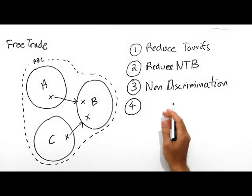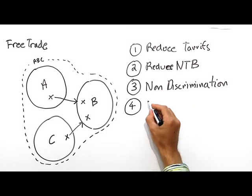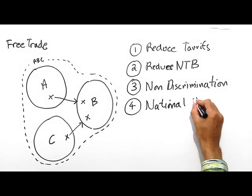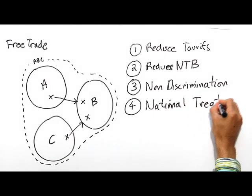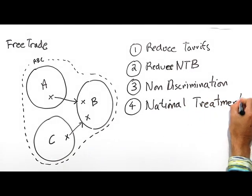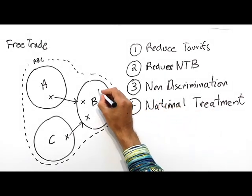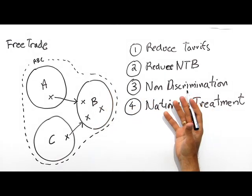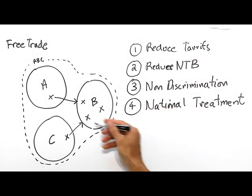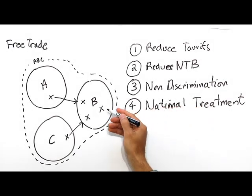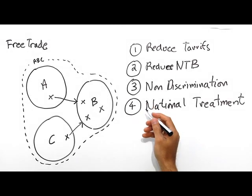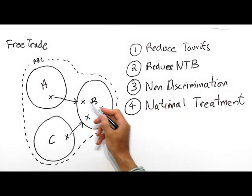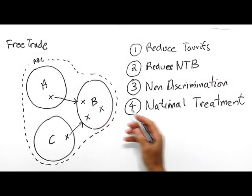The fourth way of promoting trade is to put into place something called national treatment rules. National treatment rules are really interesting because, of course, state B might produce product X itself. So what happens now? Is state B allowed to have special rules for its own product that might privilege it with respect to the products from state A and state C? And the whole idea is no.